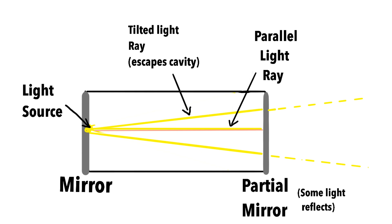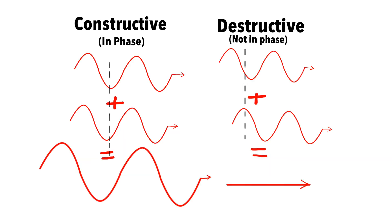So as the regular light source releases light, some of the light is diffused and goes at an angle, which is a tilted light ray. At some point, that light ray escapes the cavity, but the light that goes parallel to the cavity, that light ray reflects back off the partial mirror.